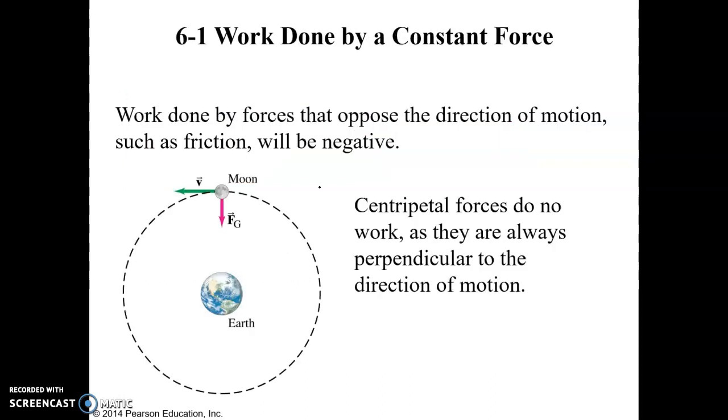Now, if you think back to the chapter where we talked about circular motion, like in this example here, the moon orbiting the Earth, the direction at any one given point in time, the instantaneous direction or velocity of the moon is tangent to the orbit. But the force of gravity that's holding the moon in that orbit is going towards the center of the Earth.